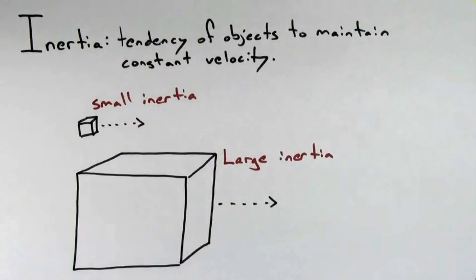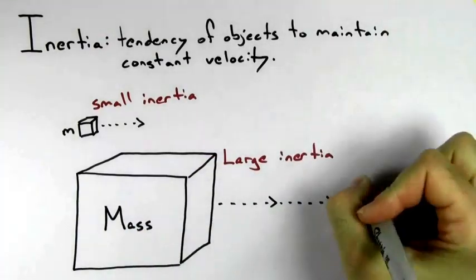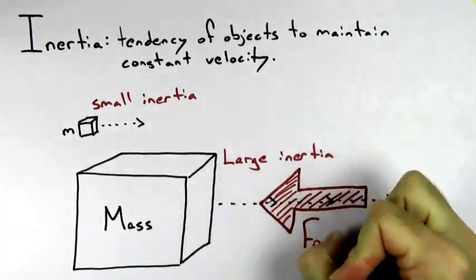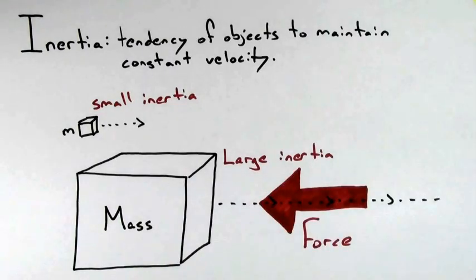Objects with small mass have a small inertia, and objects with a large mass have a large inertia. If you have a large inertia, it means you really, really want to keep moving with a constant velocity, so it's going to take a large, unbalanced external force to significantly change your velocity.